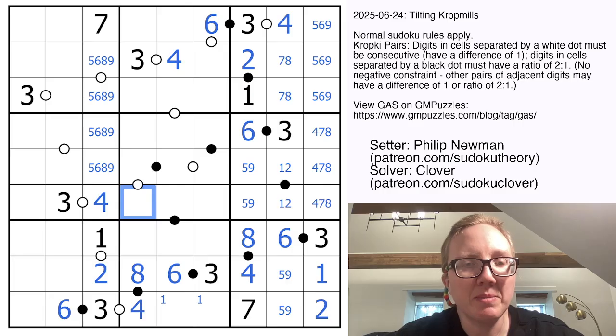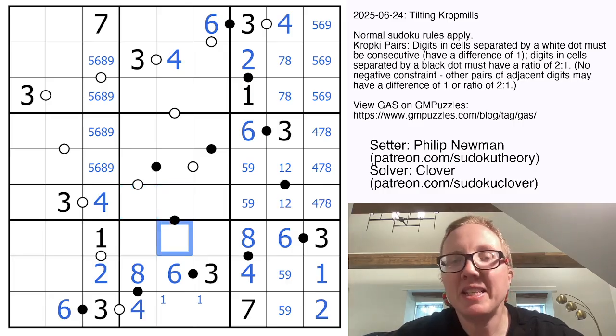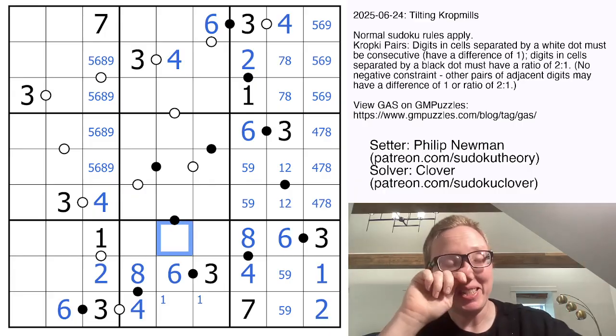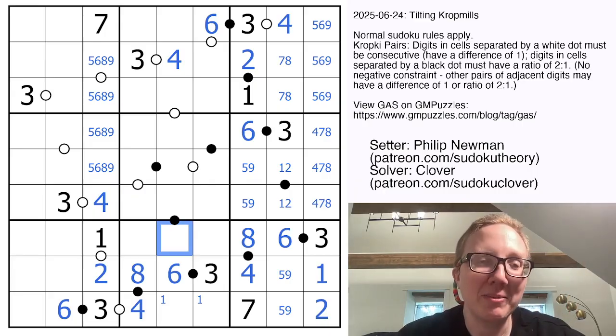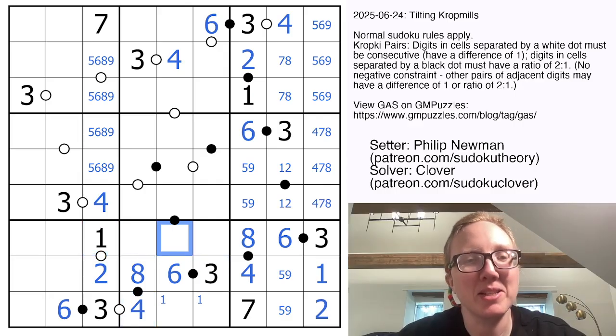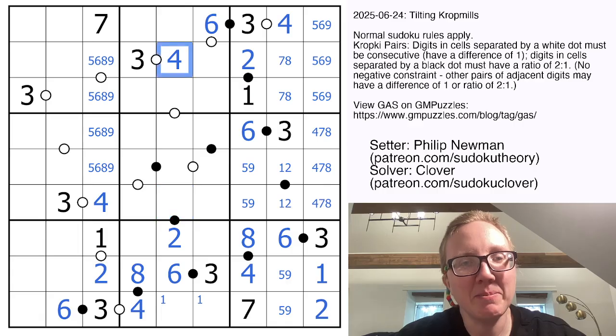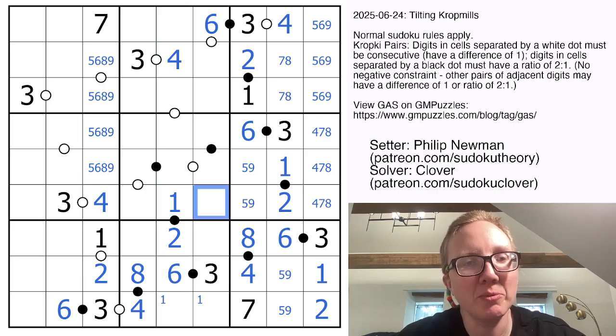I know now that a 1 is going to be in one of those cells. Here, this cell, the digits that can ever go on a black dot are 1, 2, 4, 8, 3, and 6. This actually sees 1, 4, 8, 3, and 6, so this must be a 2. It can't be next to a 4, so that's going to be a 1. So that's a 2 and a 1.